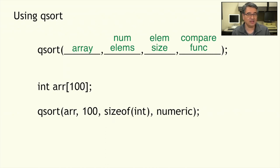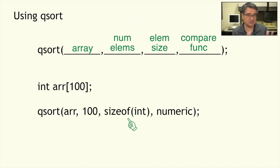If I have an array of 100 integers that I want to sort, I just call qsort, I pass in the name of the array, the length of the array which is 100, size of int which is the size of each box in the array, and then the name of a comparison function. Here I've called it 'numeric' to give me an idea about what it's supposed to do — sort the array numerically. When my function is finished, it'll be sorted from least to greatest.